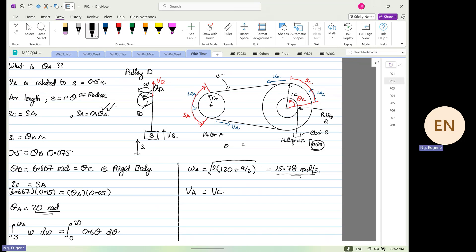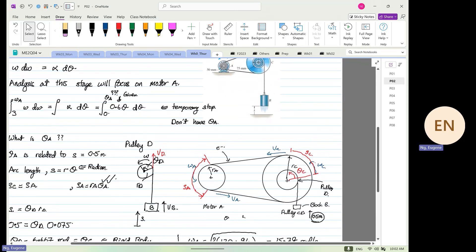So from here we have omega a, r_a, omega c, r_c. We know omega a is equal to 15.78. R_a is equal to, I can't remember now, 0.05.